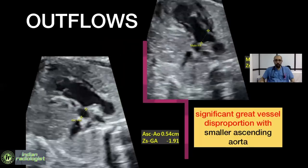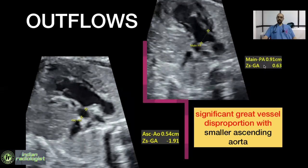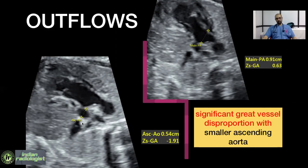Next, we have a three-vessel view where we can look at the pulmonary artery, the ascending aorta, and the SVC. The MPA measures 0.91 with a Z-score of 0.63, which is normal. However, the ascending aorta has a Z-score of minus 1.9. Another clue in this image is the size of the SVC — every time we see the SVC and adjacent aorta equal in size, or the SVC larger than the aorta, it hints that the child might have a smallish ascending aorta or be at risk of coarctation.